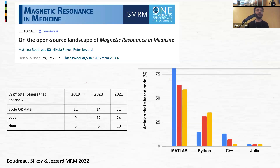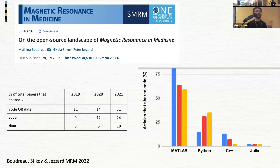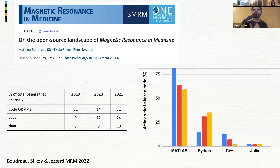Interestingly, in the journal Magnetic Resonance in Medicine, MATLAB is still the dominant language. About two-thirds of articles that shared code had code in MATLAB. Python is gaining ground but it's still a two-to-one ratio, with C++ and Julia also represented. I want to keep this talk platform-agnostic — in the end, maybe we shouldn't care whether you use MATLAB or Python. What matters is the user experience: can we make this easy and seamless for other people to reproduce?